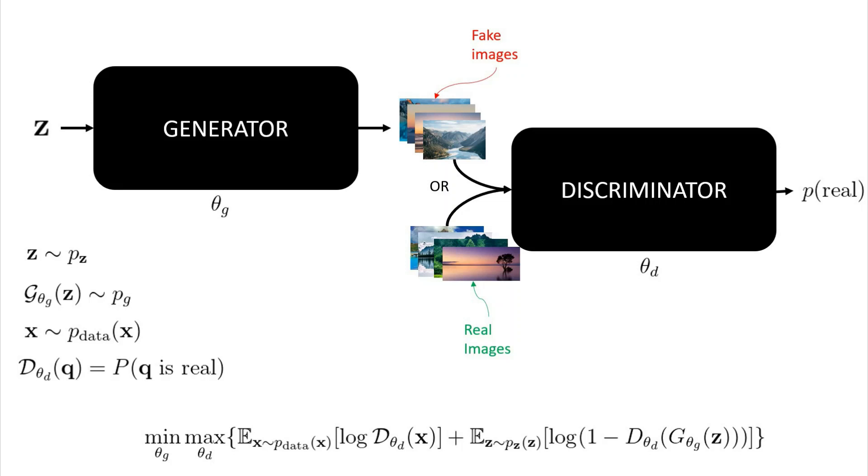However, recall that to get a good generator, we want to train it such that the discriminator does its job badly, and cannot distinguish between generated fake images and existing real images. Therefore, at the same time, we optimize the generated parameters theta G to minimize this same expression. As we optimize this expression in a min-max manner, we will eventually have a good generator that we can then use to generate as many realistic scenery images as we want.